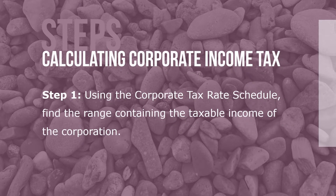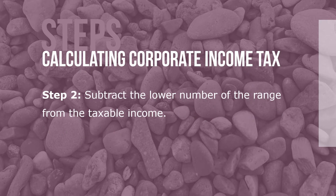Here are the steps to calculating corporate income tax. Step 1: Using the corporate tax rate schedule, find the range containing the taxable income of the corporation. Step 2: Subtract the lower number of the range from taxable income.